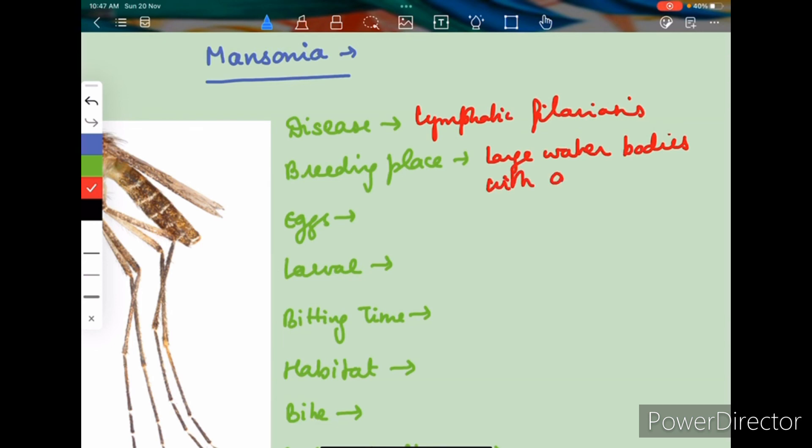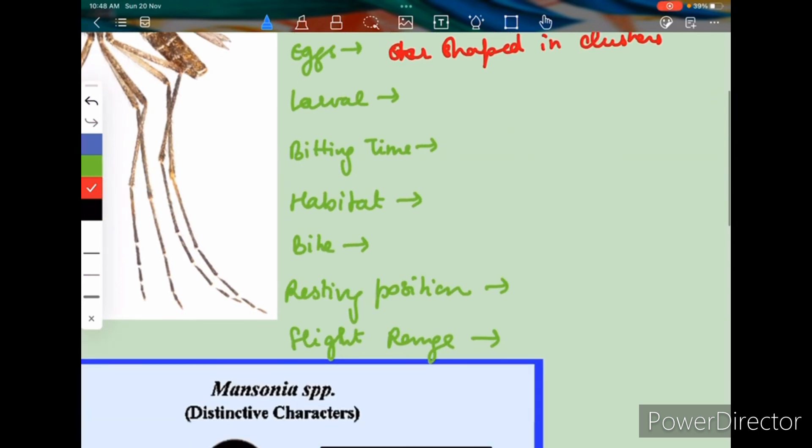Here the eggs are star-shaped in clusters, star-shaped in clusters. And the larva is again a bottom feeder, and it is attached to the roots of the aquatic vegetation.